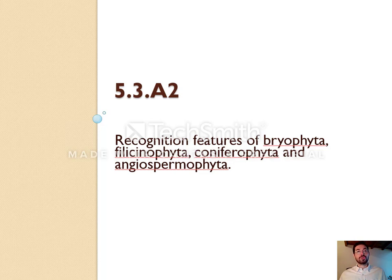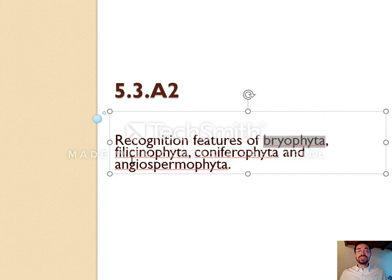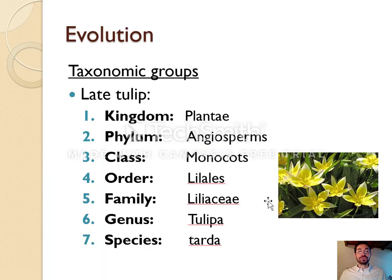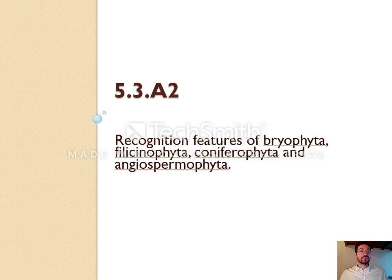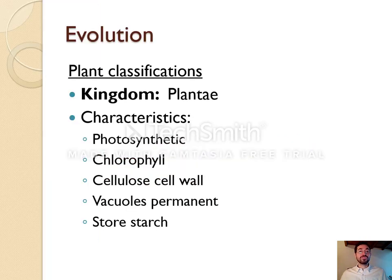The IB requires you to know four different plant phyla and their characteristics. The four main types of plants are: bryophytes, filicinophy­tes, coniferophytes, and angiospermophytes. The kingdom Plantae sits within the domain of eukaryotes. Plants are photosynthetic autotrophs with chlorophyll in their chloroplasts, cellulose cell walls, large vacuoles, and they store starch for energy.